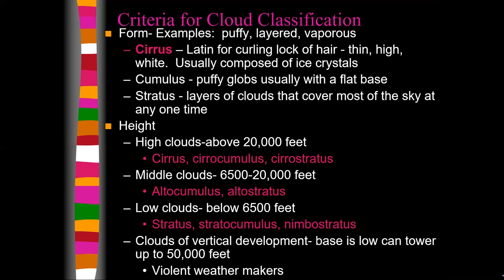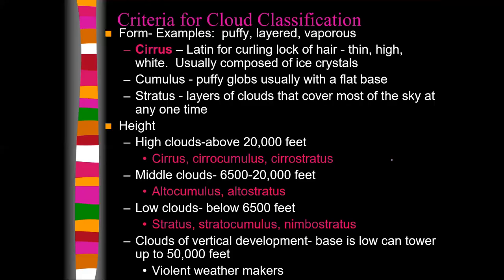Clouds of vertical development are cumulonimbus clouds. Looking at the cartoon version: we see high cirrus clouds — sometimes called mare's tails — caused by upper-level winds giving them that wispy shape. Then cirrostratus, altostratus, nimbostratus, and stratus. To tell the difference between cirrostratus and altostratus, cirrostratus clouds are a little more wispy. If you've ever seen a circle or halo around the sun or moon, it's because of cirrostratus clouds.